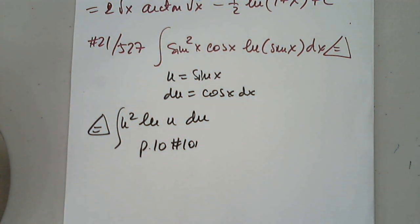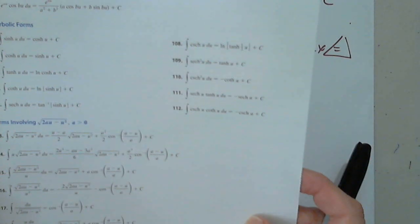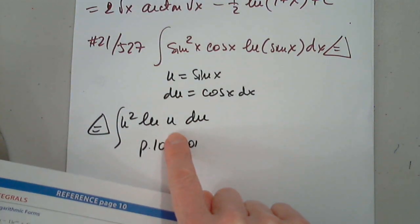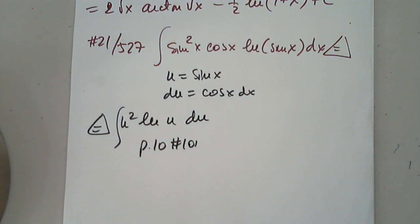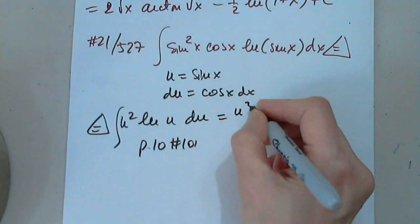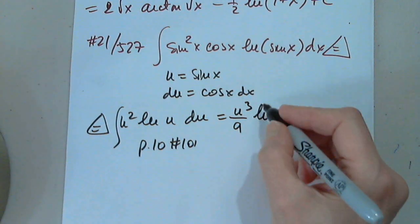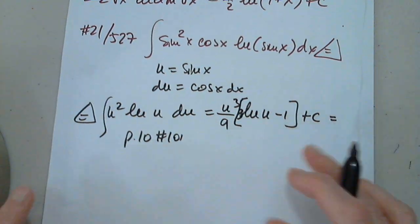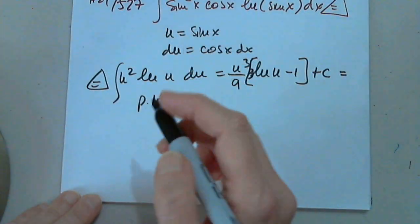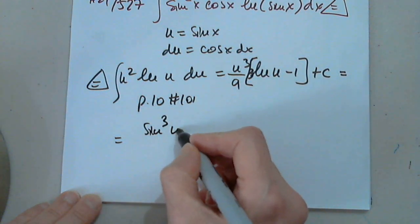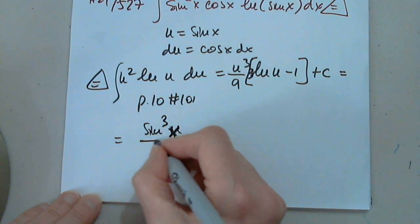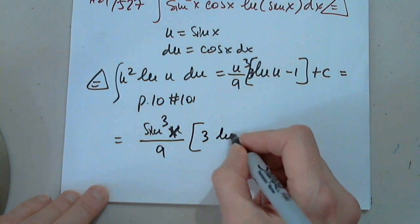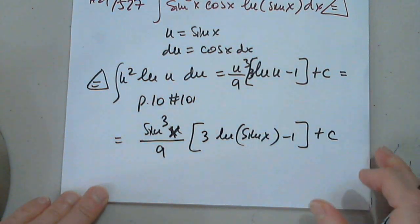On page 10, formula number 101 gives the integral of u^n · ln(u) du, where n = 2. We get: u³/9 · (3 ln(u) − 1) + C. Replacing u with sin(x), the final answer is sin³(x)/9 · (3 ln(sin x) − 1) + C.